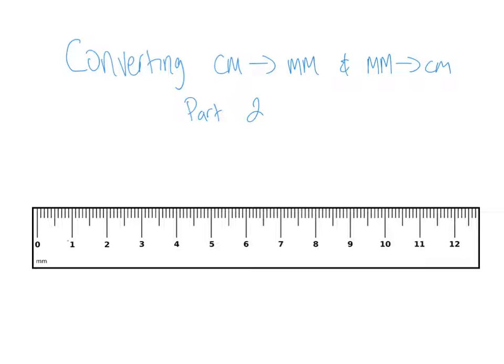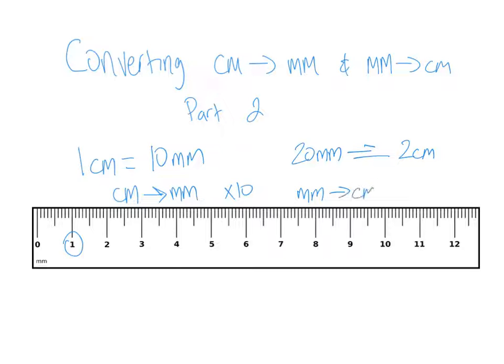So just to recap, in part 1, we said 1 centimeter equals 10 millimeters. And when you're converting centimeters to millimeters, you simply multiply by 10. And if you had millimeters to centimeters, all you had to do was divide by 10.